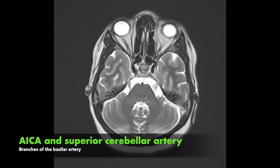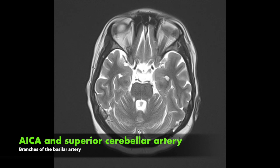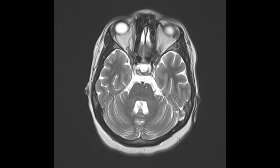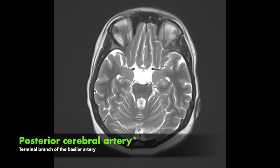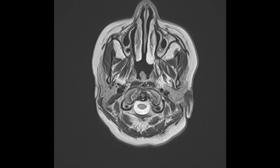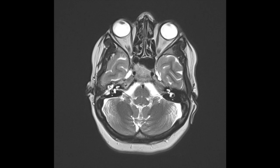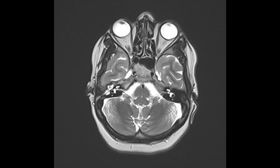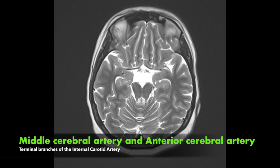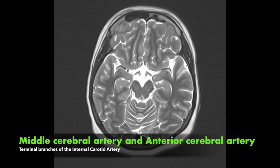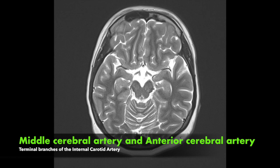Coming further up, you can just about appreciate the superior cerebellar artery coming off the basilar, especially on the right side, before it gives off the posterior cerebral artery bilaterally. At the skull base you can see the internal carotid bilaterally with the internal jugular vein behind it — the internal carotid comes up through the carotid canal and gives off the middle cerebral artery and the anterior cerebral artery.